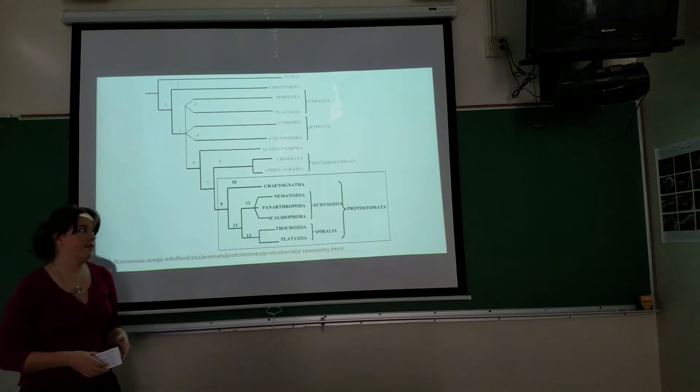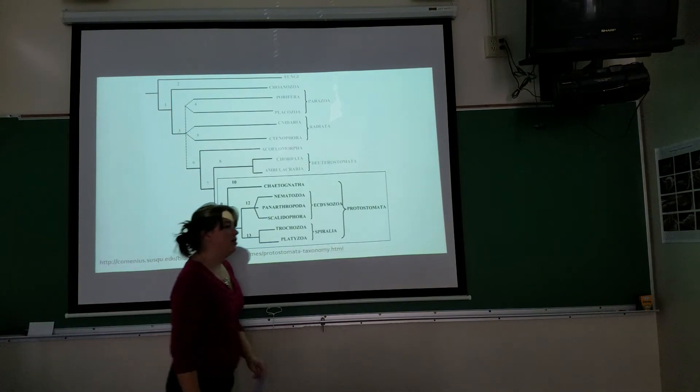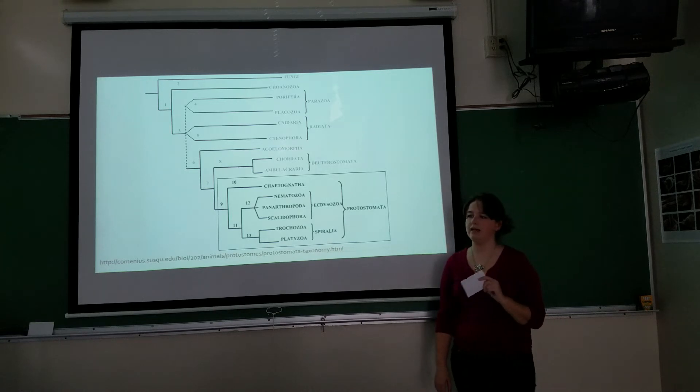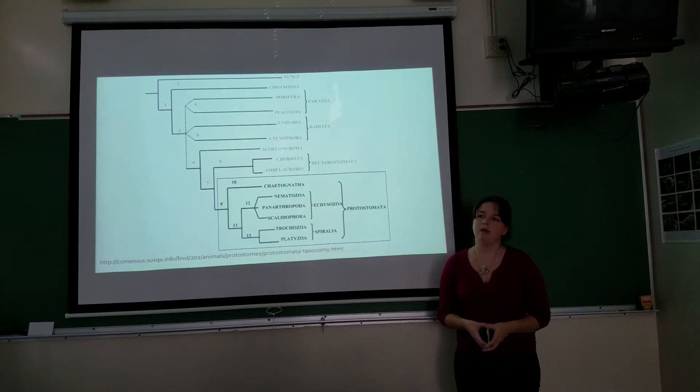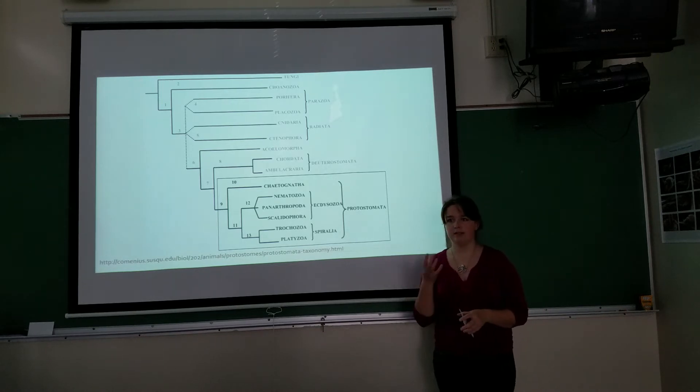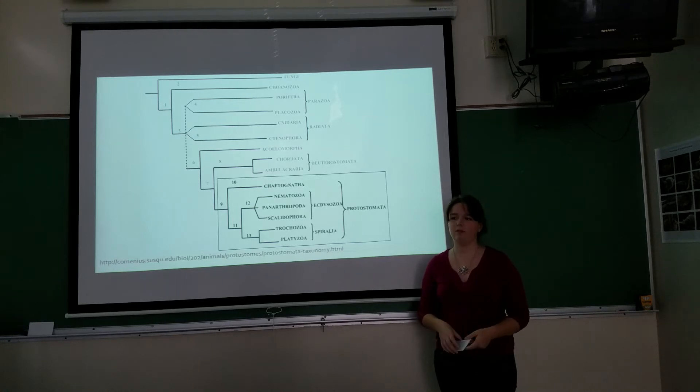So where do these fall in the phylogenetic tree? This is very much contested right now in the science world and a lot of it surrounds the idea of the blastopore development. So in protostomes the blastopore forms the mouth, whereas in deuterostomes the blastopore forms the anus. In Chaetognaths the blastopore doesn't develop into anything, which makes it hard to distinguish between whether it's a deuterostome and a protostome.